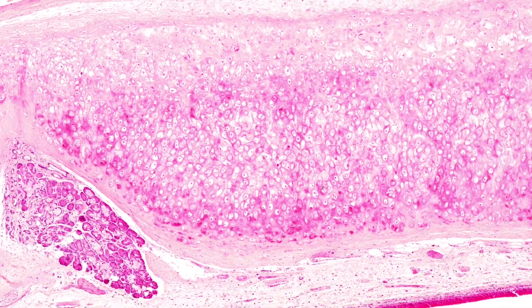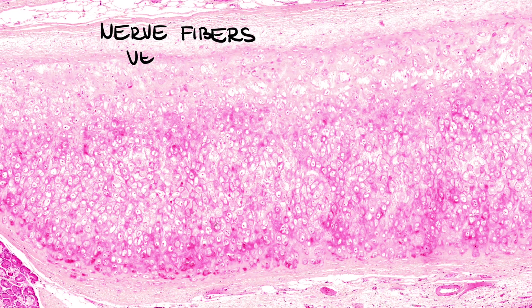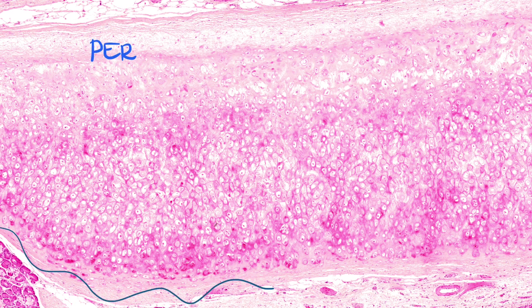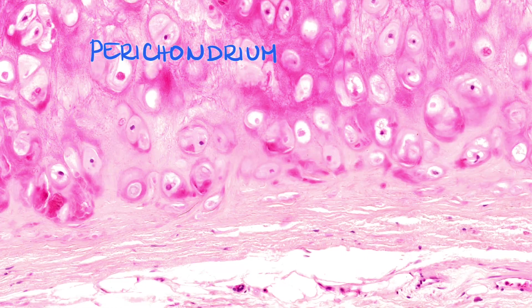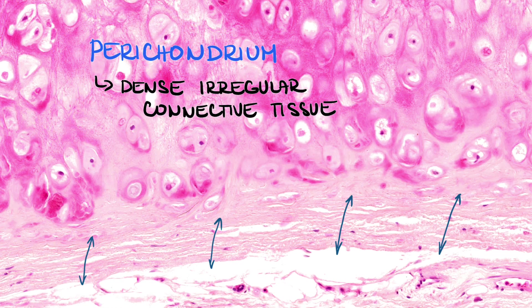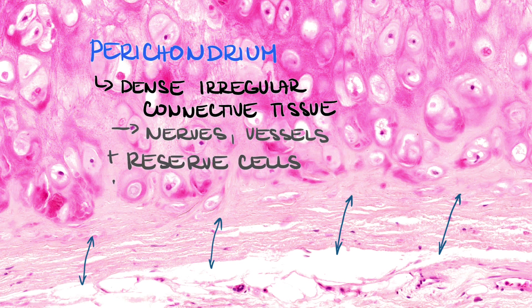Cartilage in general does not contain nerve fibers and vessels; innervation and nutrition is provided from the perichondrium. We can see perichondrium on the surface of the cartilage. It is made of dense irregular connective tissue and contains nerves, vessels, and also reserved cells for the cartilage — prechondroblasts — which eventually differentiate into chondroblasts that start to produce matrix, and when they embed themselves within matrix, they become chondrocytes.